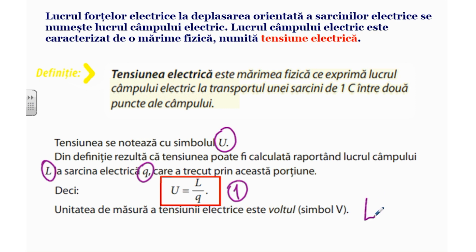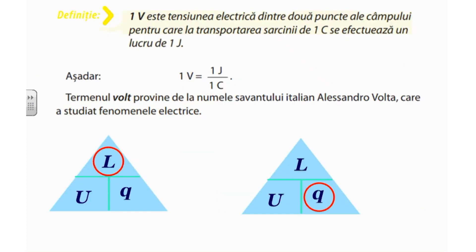Unitatea de măsură a tensiunii electrice este voltul. Prin definiție, un volt este tensiunea electrică dintre două puncte ale câmpului pentru care, la transportarea unei sarcini de un coulomb, se efectuează un lucru de un joule. Deci un volt este egal cu raportul dintre un joule și un coulomb.